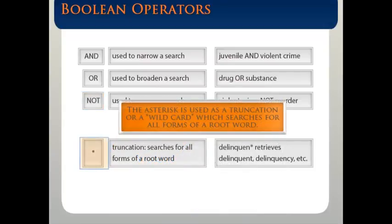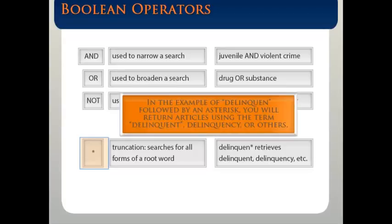The asterisk is used as a truncation or wildcard, which searches for all forms of a root word. In the example of delinquent followed by an asterisk, you will retrieve articles using the term delinquent, delinquency, or others.